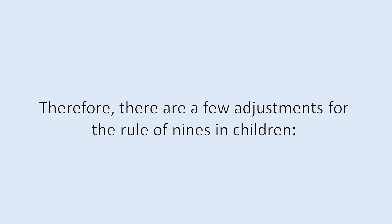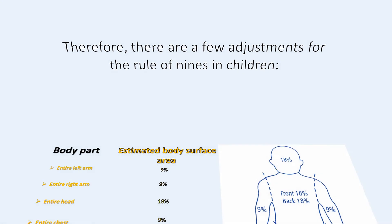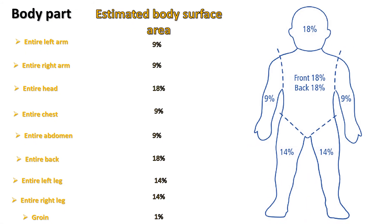Therefore, there are a few adjustments for the Rule of Nines in children. It is inaccurate in children due to the relative disproportion of body parts — hips and legs are smaller, while the head, neck, and shoulders are larger. Hence, a pediatric version is available in chart form that estimates burn area as it changes with age.